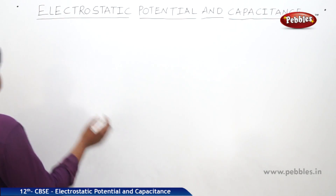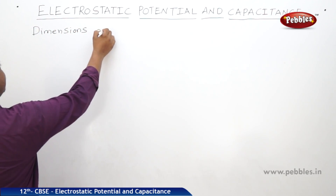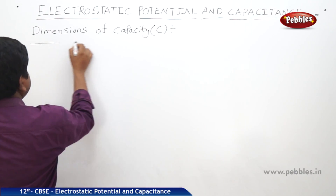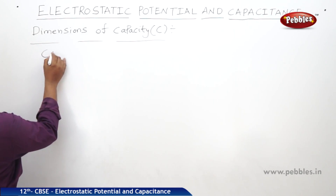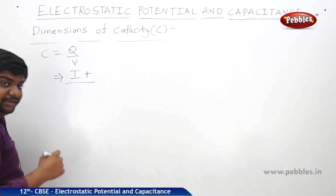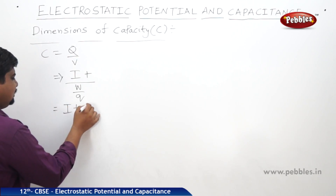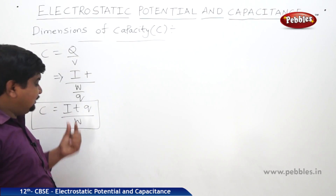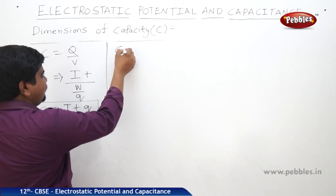The next concept is dimensions of capacity — how to write the dimensional formula of a physical quantity. First, write the general formula C is equal to q by v. We can write q as i times t, and v as w by q. Therefore, C equals i·t·q divided by w, where i is current, t is time, q is charge, and w is work in joules.